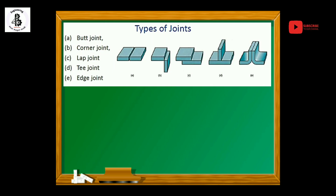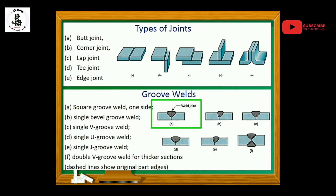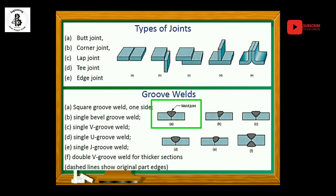Those are the basic types of joints used in the welding process. Now I will explain about groove welds. Figure A shows a square groove weld — it is from one side only, with no edge preparation on the base metal or parent metal. That is known as a square groove weld joint.